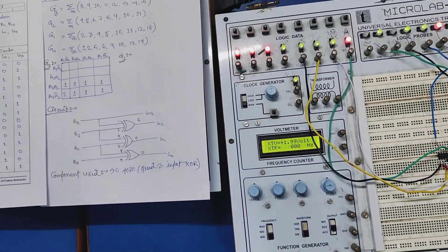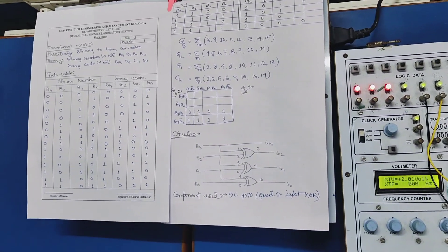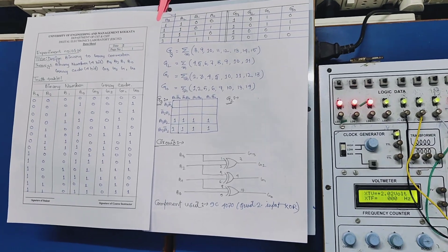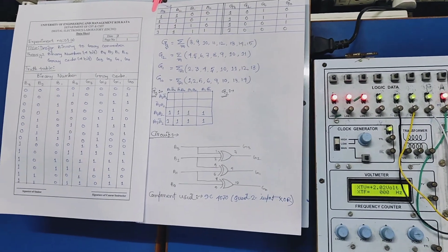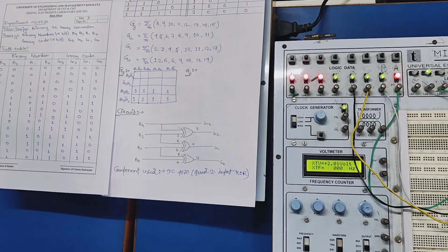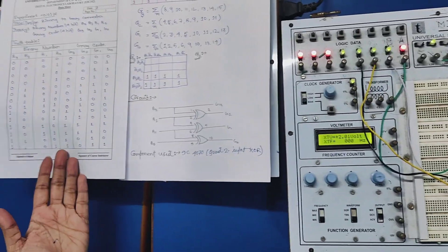Here we are using one IC4070 quad two-input XOR gate and we got the expression from the truth table. Here is the truth table.